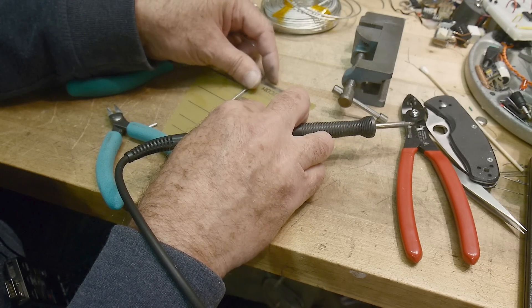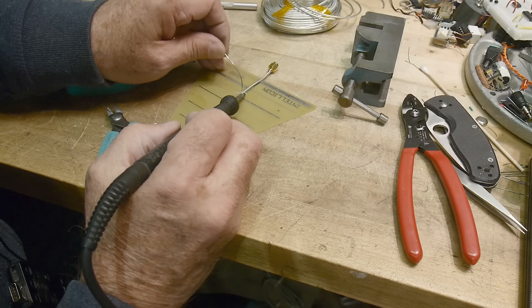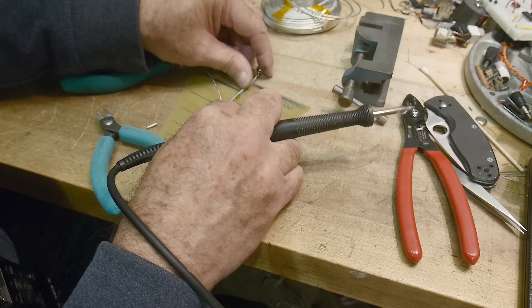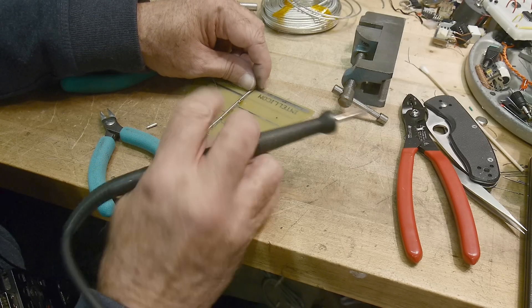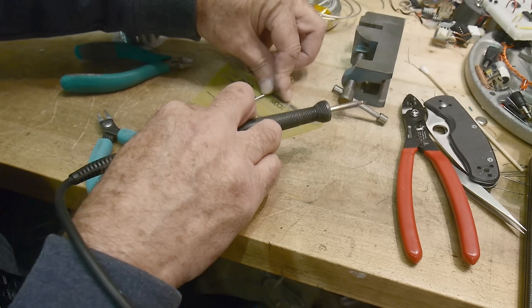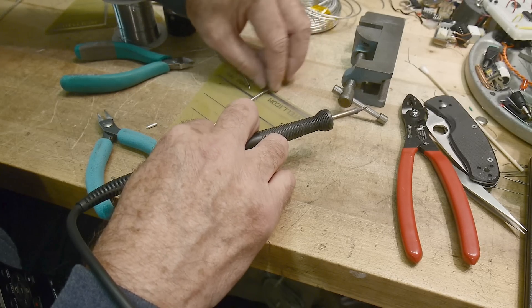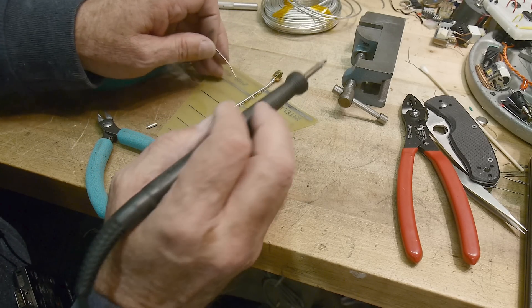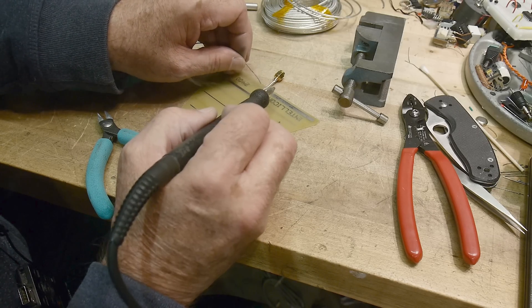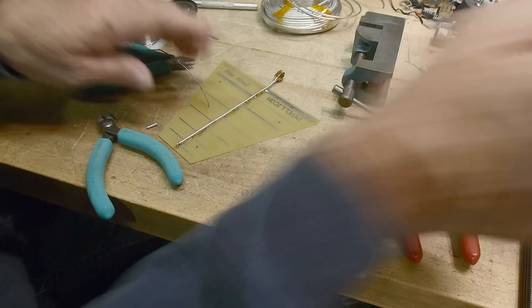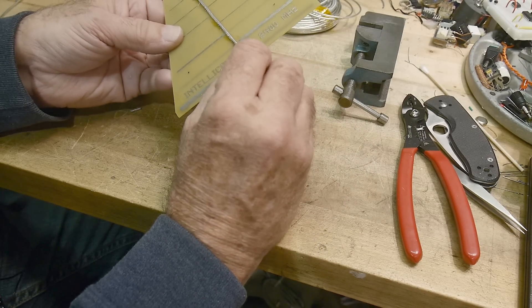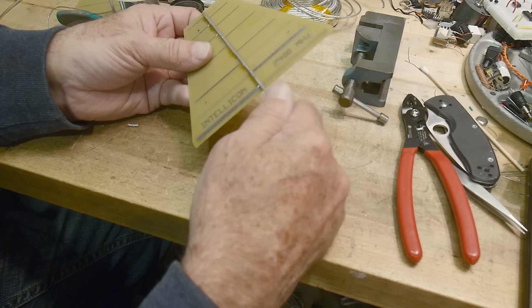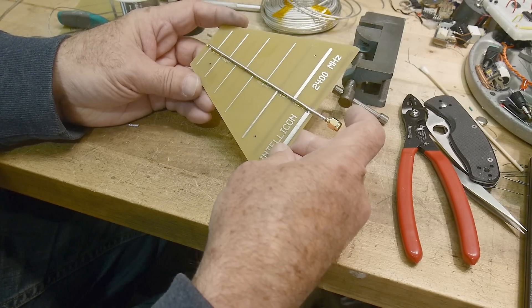Pull it over a little bit there we go. Straighten this out a bit. All right, that should be it. We should have an antenna. Very nice. Let's take it over to the VNA and measure it, see how it came out.